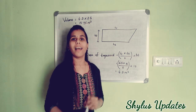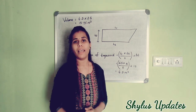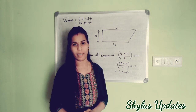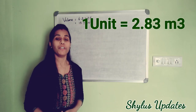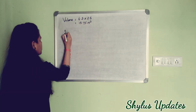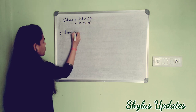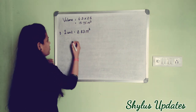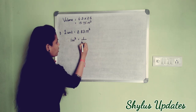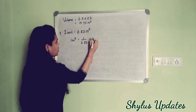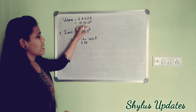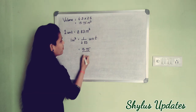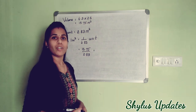We get the volume in cubic meters. But at site, engineers won't state the measurement in cubic meters — they use cubic feet or units. We know that 1 unit equals 2.83 cubic meters, so to convert: 1 cubic meter equals 1 divided by 2.83 units. Converting 15.75 cubic meters gives 15.75 divided by 2.83, which equals 5.56 units.